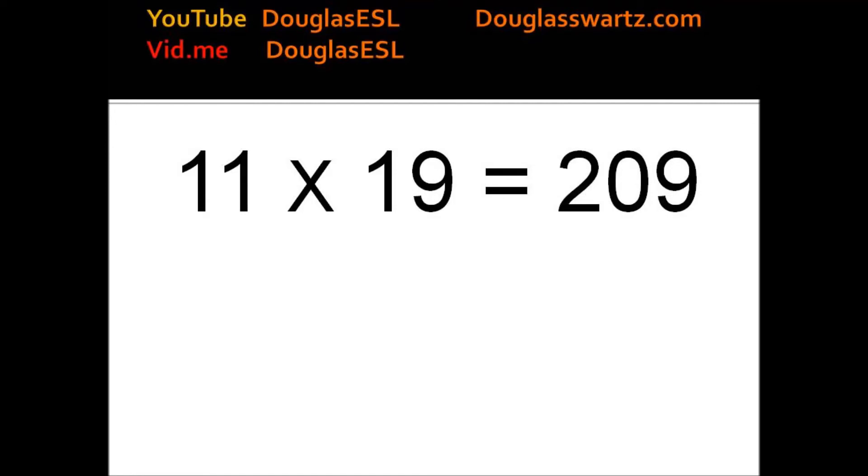11 times 19 equals 209. 11 times 20 equals 220. 11 times 21 equals 231.